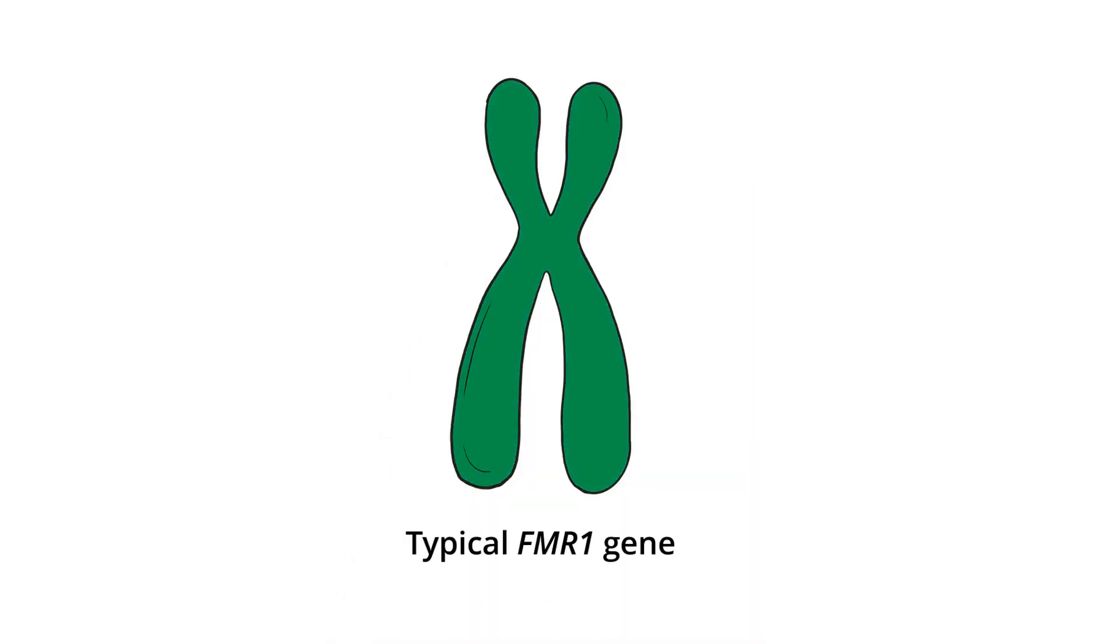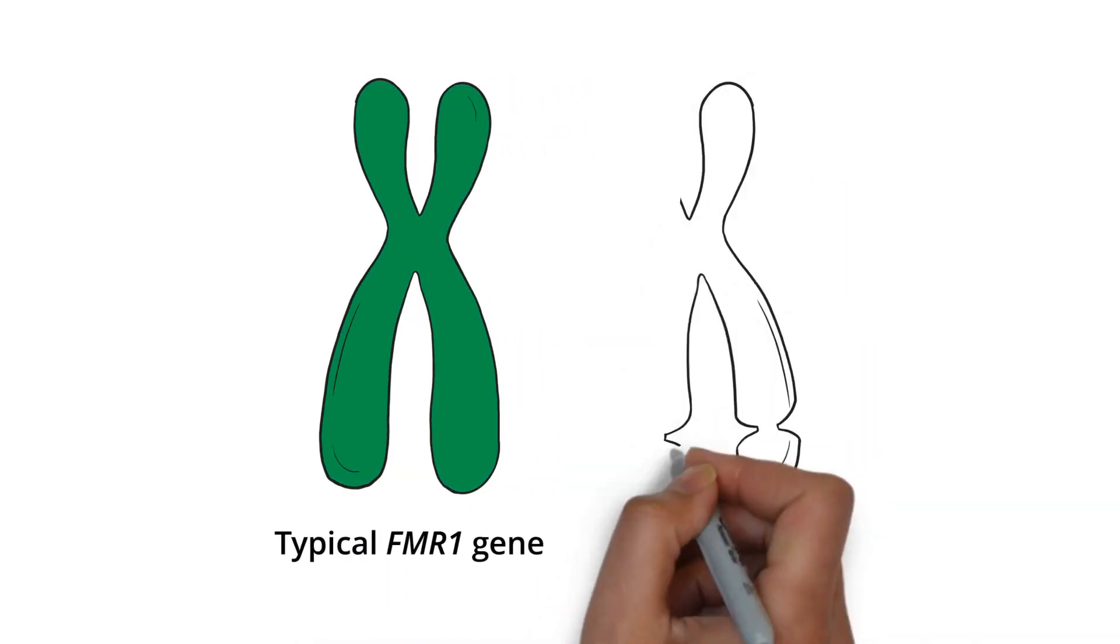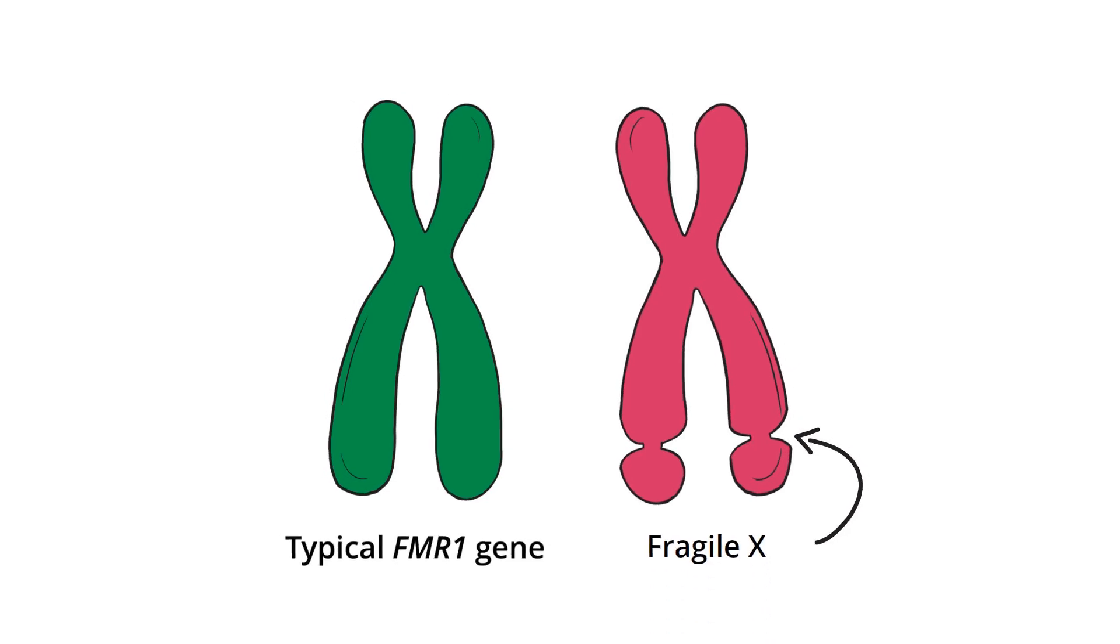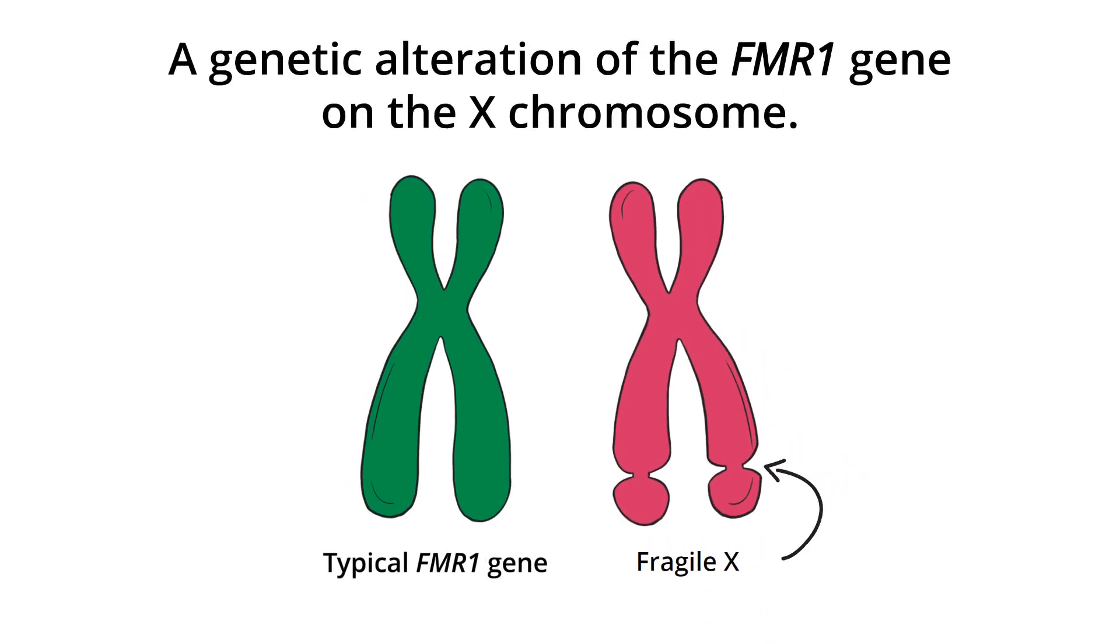This is a typical FMR1 gene. This FMR1 gene has a fragile section. That's how Fragile X got its name. It's a genetic alteration of the FMR1 gene on the X chromosome.